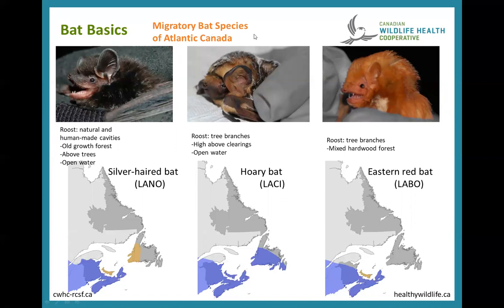Now the three migratory bat species in Atlantic Canada. The silver-haired bat is confirmed in New Brunswick and Nova Scotia, and may be in Prince Edward Island and western Newfoundland based on acoustic records, though no visual confirmation exists. It roosts in natural and human-made cavities, and also in unusual places like wood piles. It can be found foraging in old-growth forests and flying higher above the tree line than hibernating species, and also forages over open water.